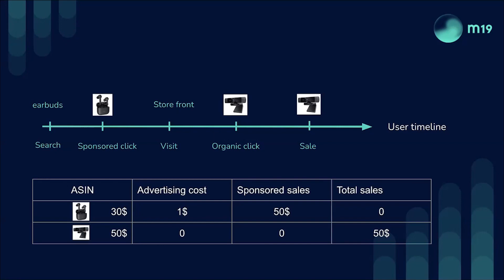So here we described that journey. It can take one day, three, four, five, or up to 30 days, depending on the metric we are looking at. What will be reported on the advertising report is as follows. Amazon reports all sales happening on a user session independently from whether it's the product that was clicked or not. In the example, the user didn't buy the earbuds — he bought the webcam, the camera.